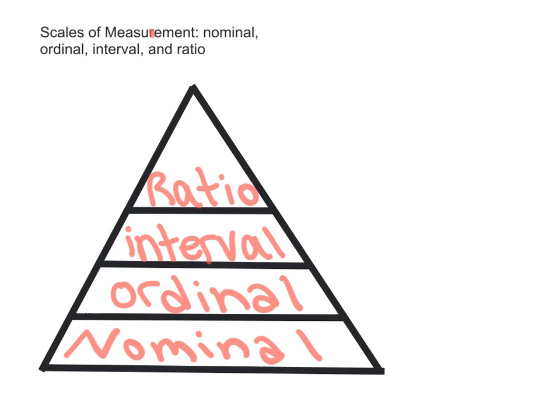With nominal scales, these are any kind of variables that consist of a set of categories that just have a different name. When you think nominal, think name. Measurements on nominal scale label and categorize observations, but they don't necessarily make any quantitative distinctions between those observations. They're not going to rank anything or put them in different orders.